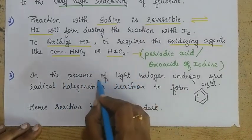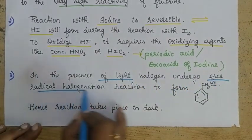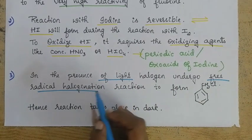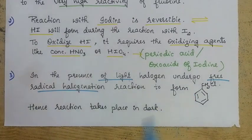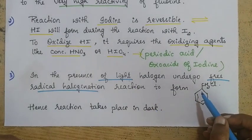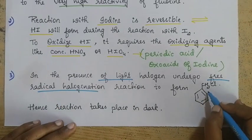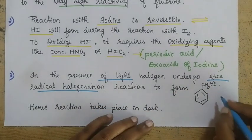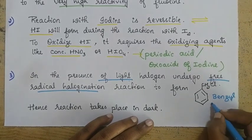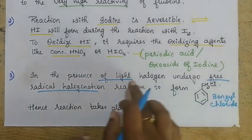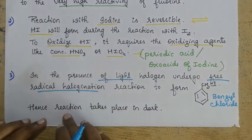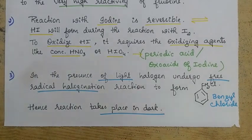In the presence of light, halogen will undergo free radical halogenation. When free radical halogenation takes place, one of the hydrogens is replaced by halogen. So when toluene undergoes free radical halogenation in the presence of light, one hydrogen from the methyl group is replaced by chlorine, giving a product called benzyl chloride — not the aryl halide we want. That is why this reaction must take place in the dark, meaning in the absence of light.